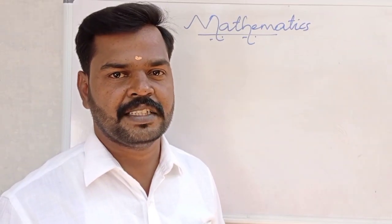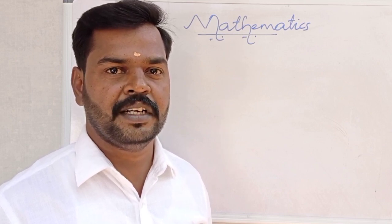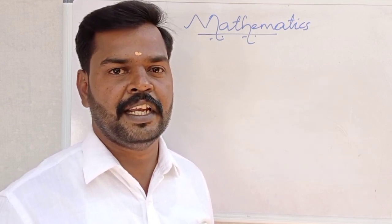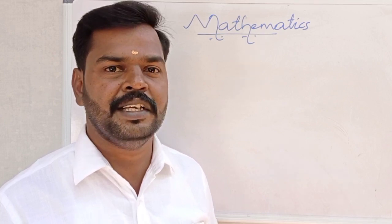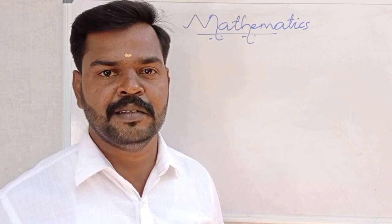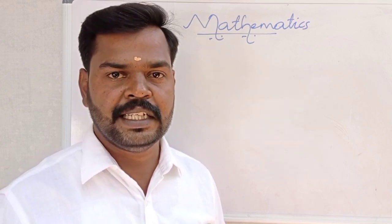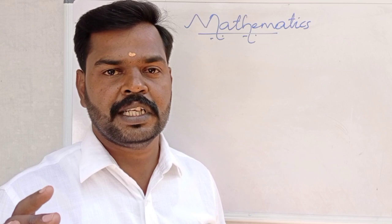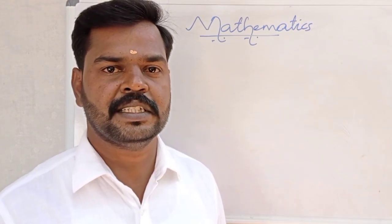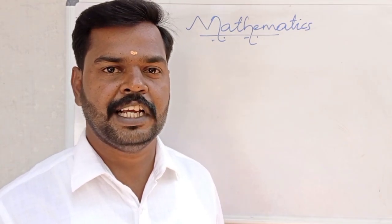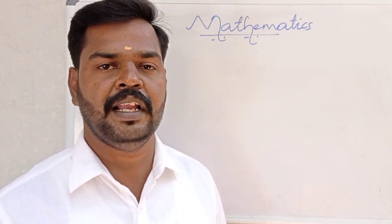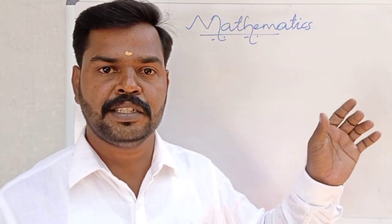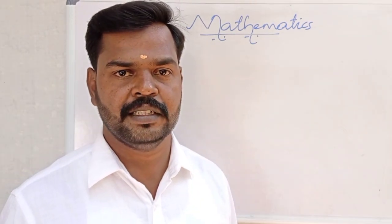Let us revise what we discussed today. Geometry is a Greek word — two words: geo meaning earth, and metron meaning measurement. First discussed by mathematician Euclid, so Euclid is known as the father of geometry. We discussed three undefined terms: points, lines, and plane — from Euclid's book, the Elements. We also discussed line segment, ray, and line: a line segment has fixed length and two endpoints; a ray has no fixed length, one side extending, one endpoint; a line is two sides extending with no fixed length.